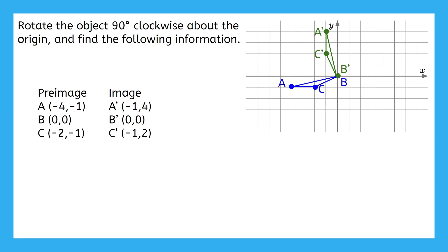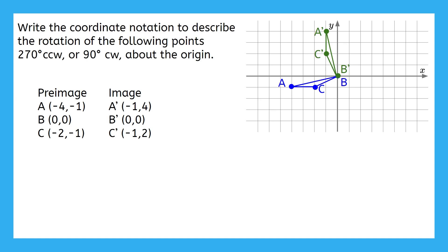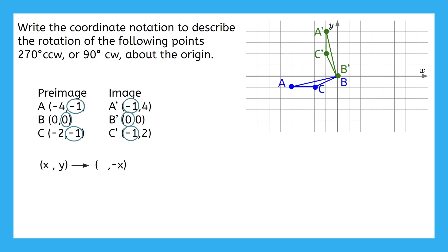This is the final problem from the previous lesson. This time we're working with either a 270 degree counterclockwise or a 90 degree clockwise rotation. We can start with the general notation and then look for a pattern. The x values from the preimage moved to become the second coordinate in the image and changed signs — we write that as negative x being the second coordinate. The original y values became the first coordinate in the image, so we just write y as the first coordinate. And we have our final answer.